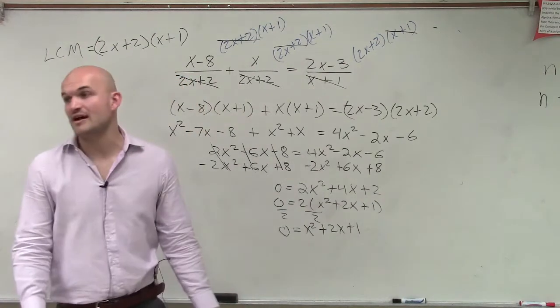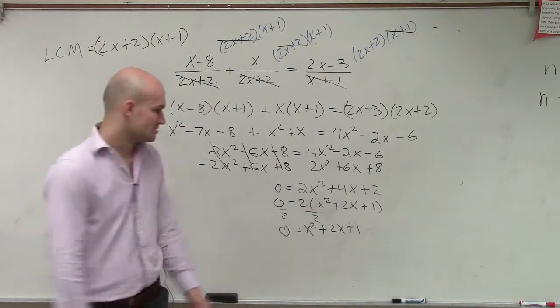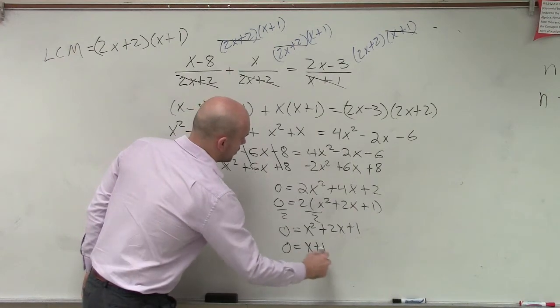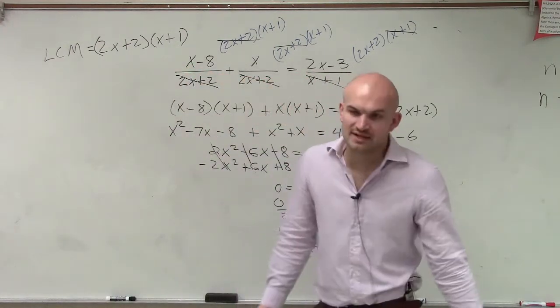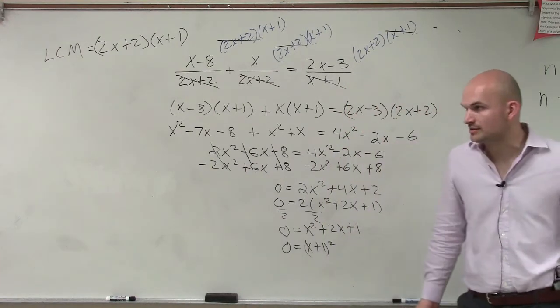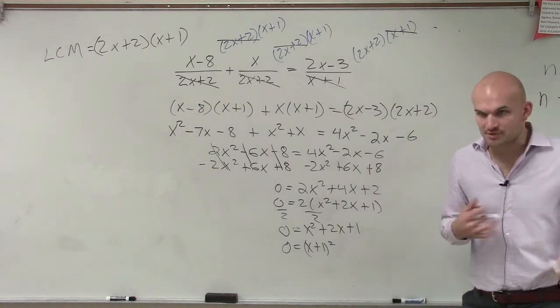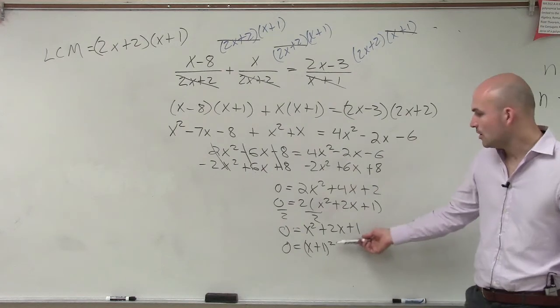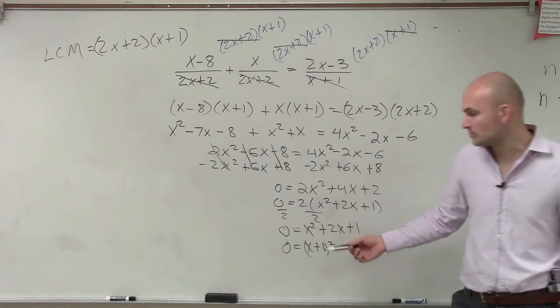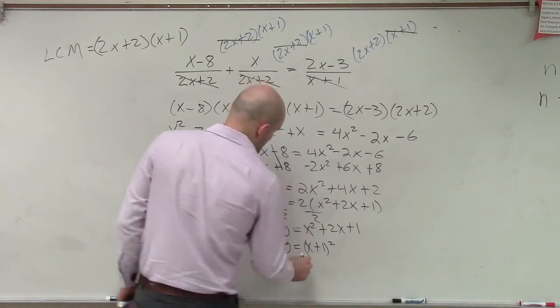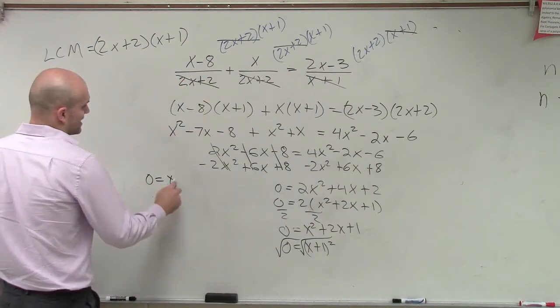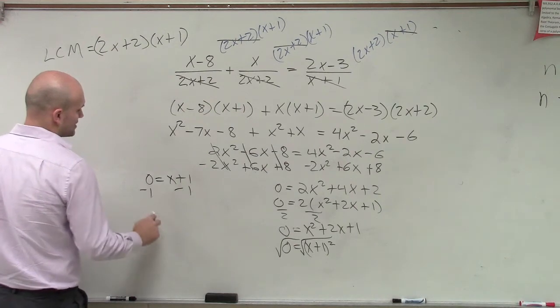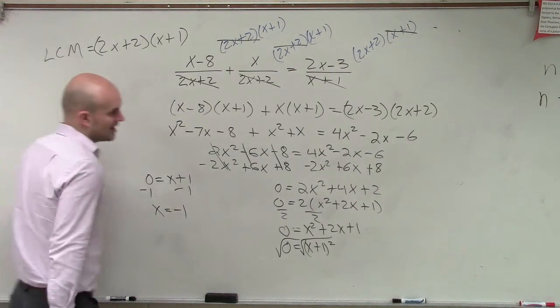Now we need to determine, can we factor that? Yes. This equals 0 equals x plus 1 squared. You could also use the 0 product property and say x plus 1 times x plus 1 equals 0. Or, if I just write it as x plus 1 squared, I can now use the square root method, and therefore I can get 0 equals x plus 1, subtract 1, subtract 1, x equals negative 1.